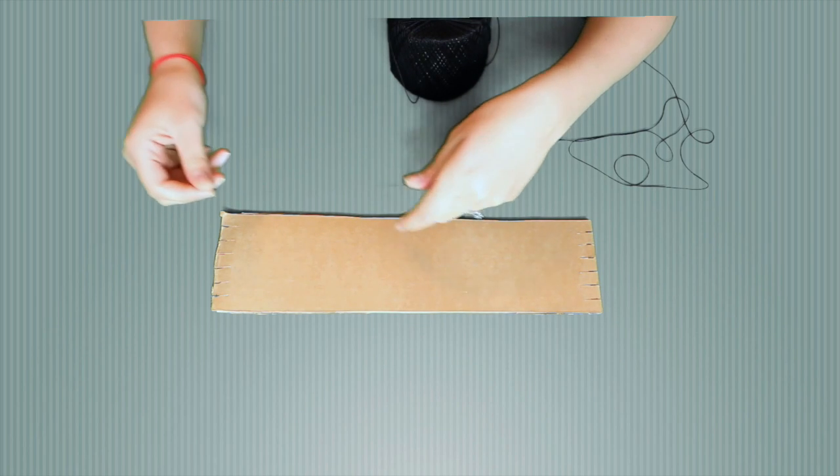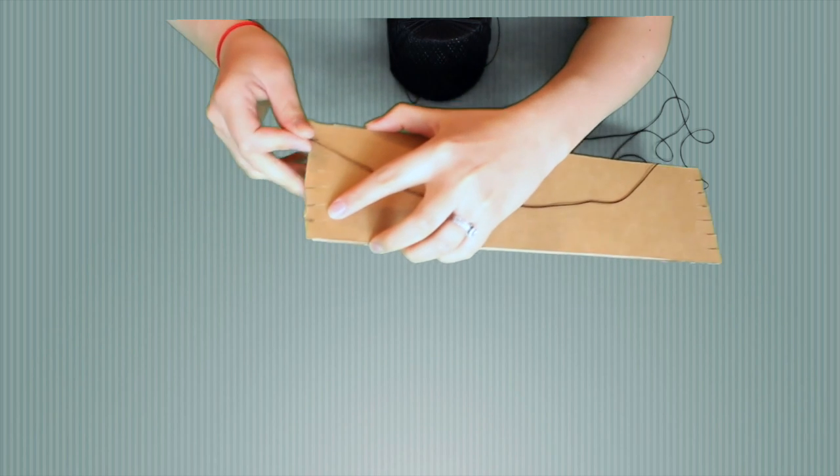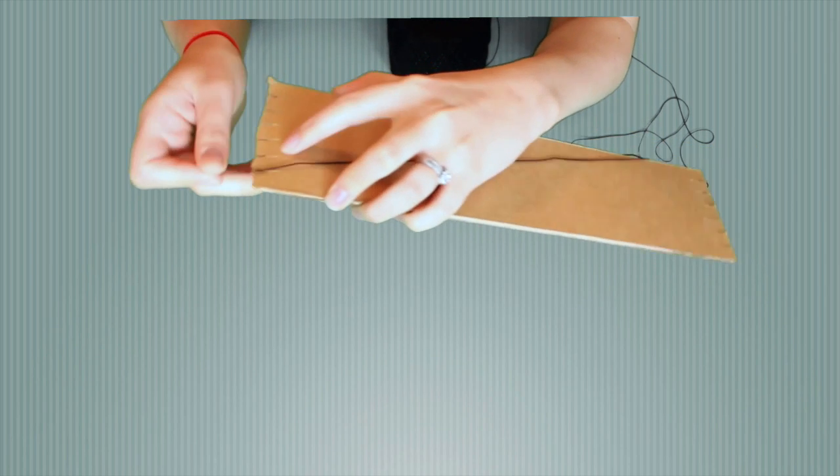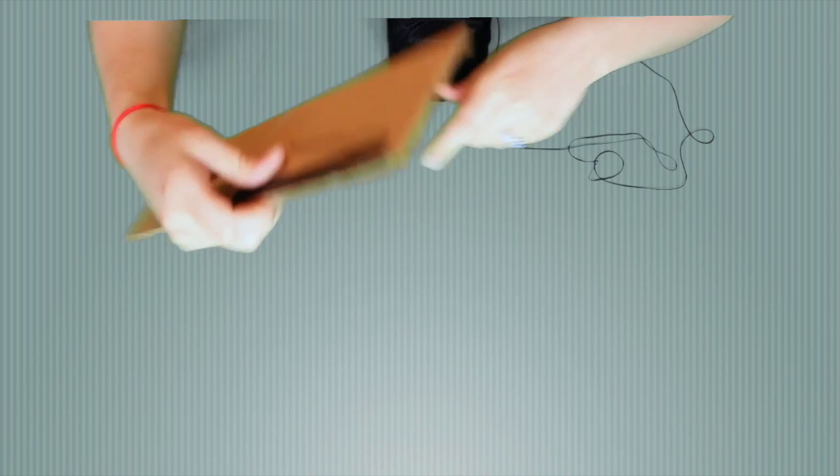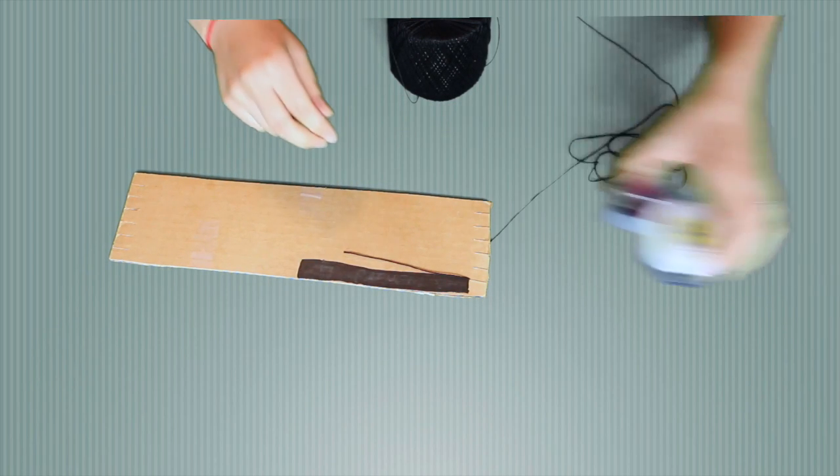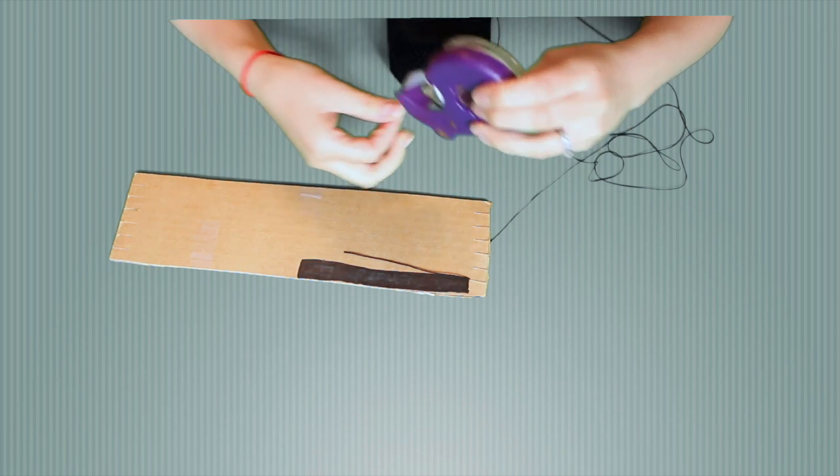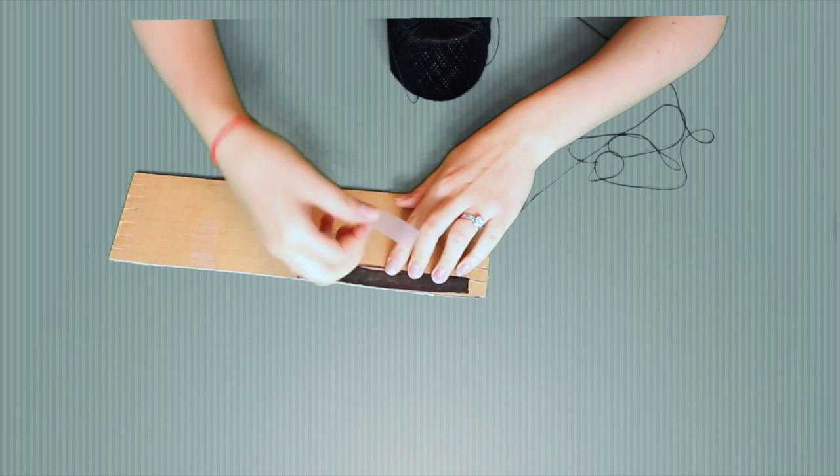Your first step is to take your thread and insert it into the first cut notch on your loom. Then flip it over and use a piece of scotch tape to secure the thread.